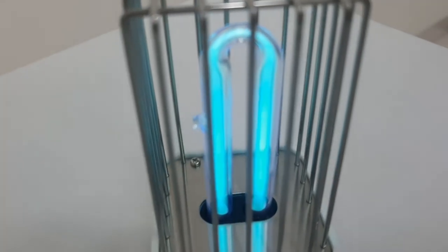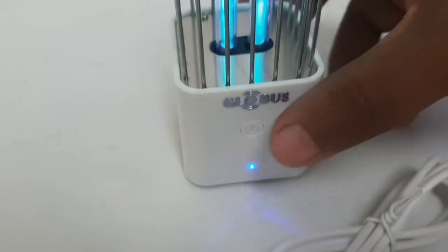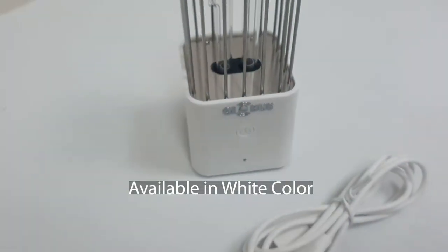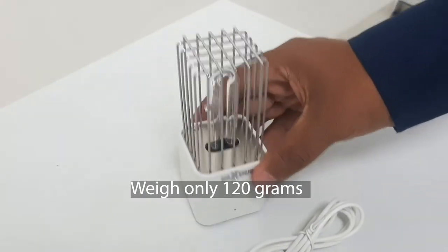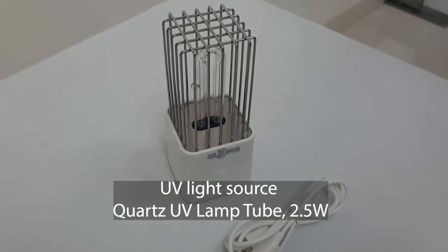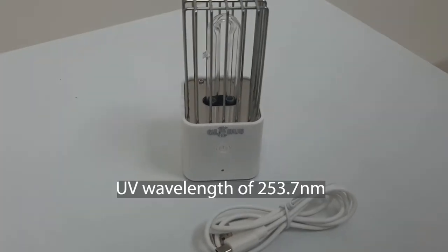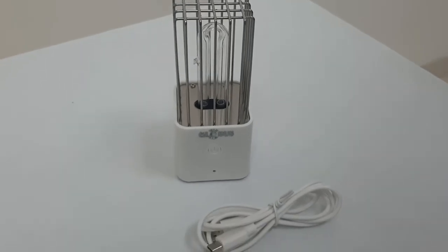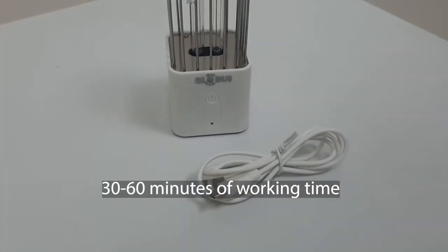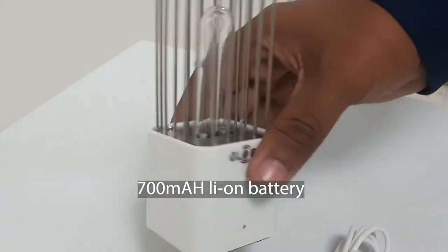Material for this sterilizer is ABS plus stainless steel. It comes in white color. It is extremely lightweight at around 120 grams. UV light source is a quartz UV lamp of 2.5 watts. UV wavelength is 253.7 nm. Working time is 30 or 60 minutes. This has an inbuilt lithium ion battery of 700 mAh.